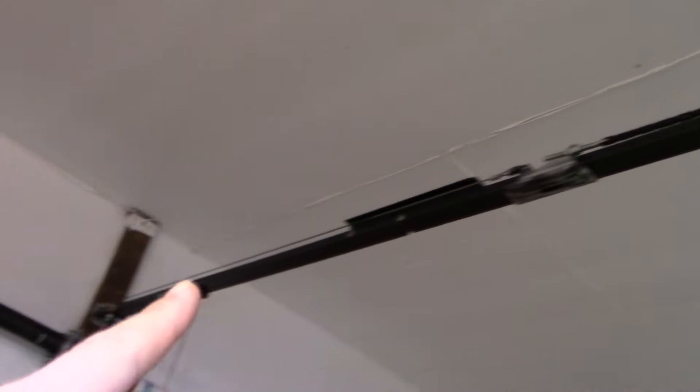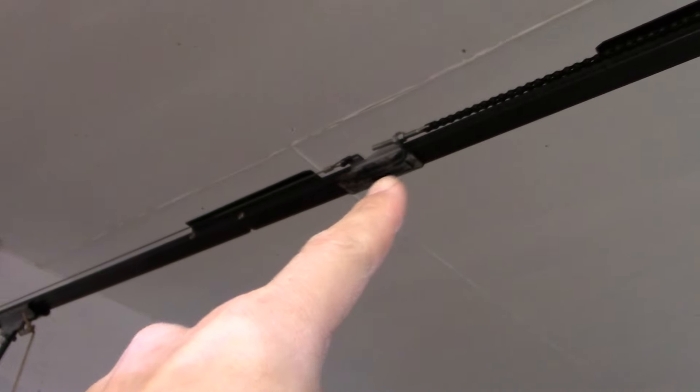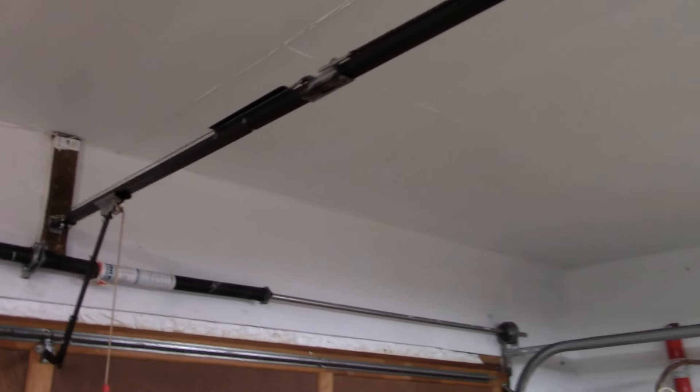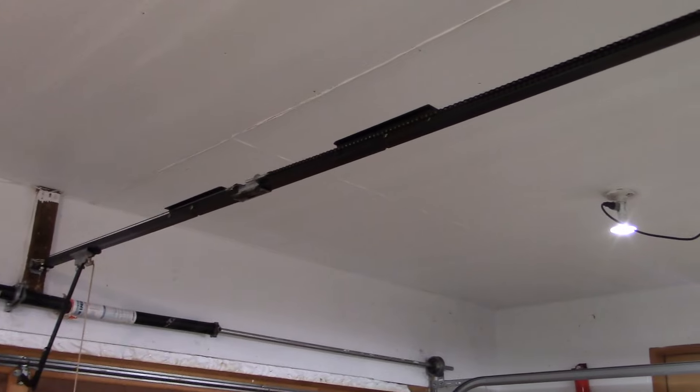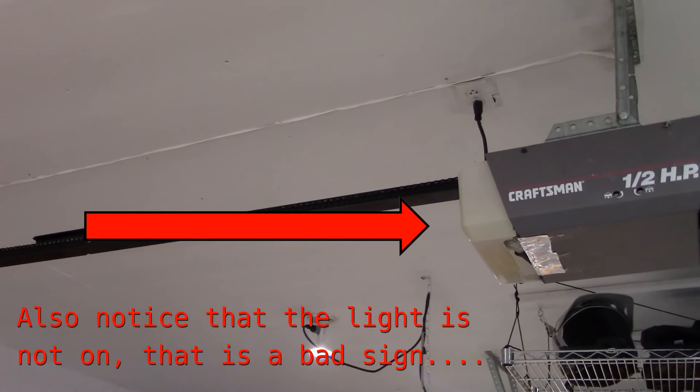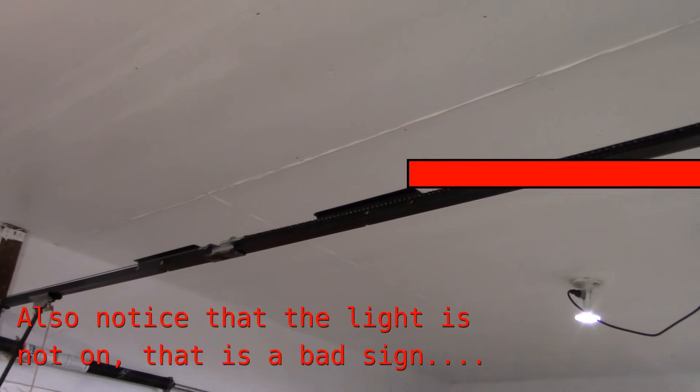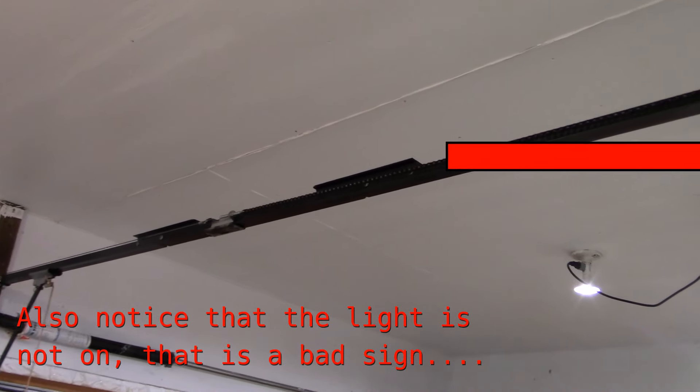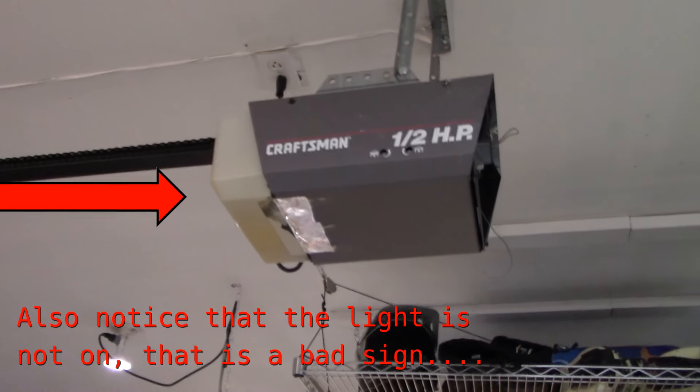So what I've done is I've disconnected the actual door from the little trolley assembly here just to minimize what could potentially be going wrong. So right now the motor should just be operating the chain up there and just trying to move this empty trolley so there shouldn't be a lot of work for it to do, but let me show you how it basically doesn't work.